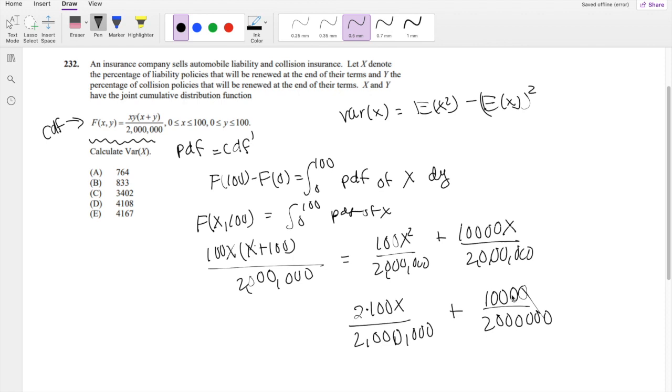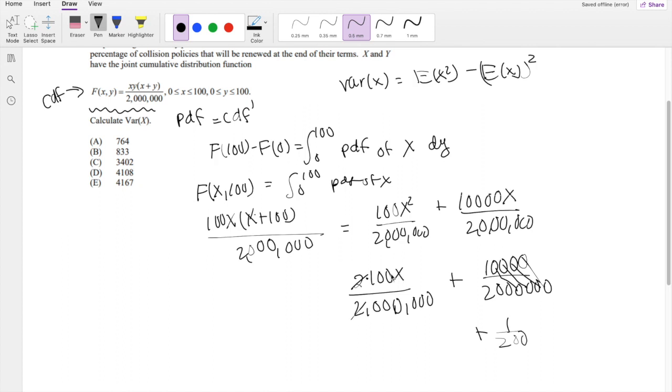So then these cancel out, these cancel out, these cancel out, and this cancels out. So we get 1 over 200 on this side, plus, right here, the 2 cancels out, and the zeros cancel out. So you get x over 10,000.